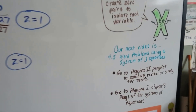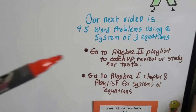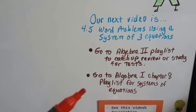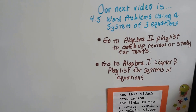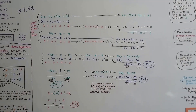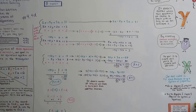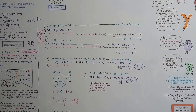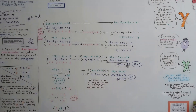Our next video is 4.5 and we're going to discuss word problems that use a system of three equations. I'm going to add this video to the Algebra 2 playlist, and there will also be a link for the Algebra 1 Chapter 8 playlist for systems of equations in this video's description, so you should be able to just click on them. I know this is really confusing for some people — if you're really lost, maybe you didn't watch the three previous videos, and if you did and you're still confused, maybe you need to watch them again. Give them a chance, take it slow. Good luck — I'll see you next video. I think you can do this!